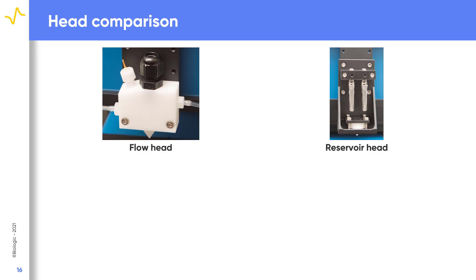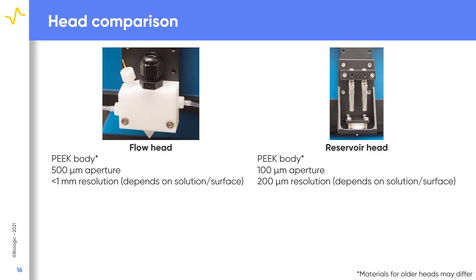How are the two heads supplied with the SDS 470 compared? Both heads are now made of PEEK for the highest chemical compatibility. The flow head has a 500 micron aperture resulting in a resolution better than 1 mm, though this is dependent on the solution and sample.